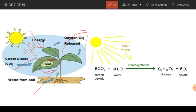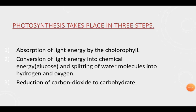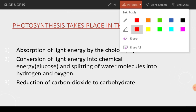In the equation, six molecules of carbon dioxide and six molecules of water, with the help of sunlight, carry out the process of photosynthesis to produce glucose and oxygen. The plants keep the glucose in their body and release the oxygen. Photosynthesis takes place in three steps.